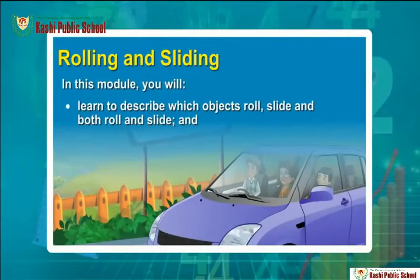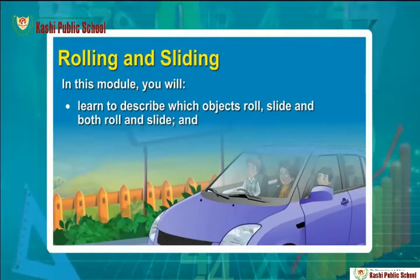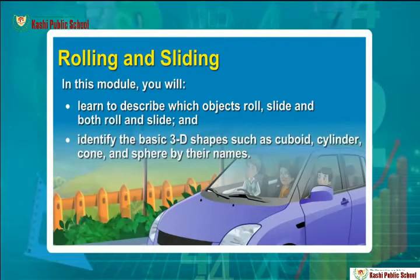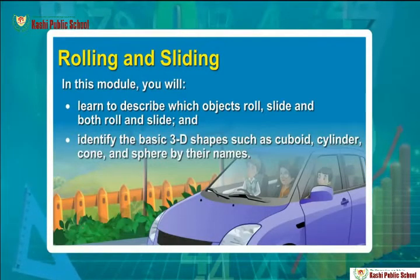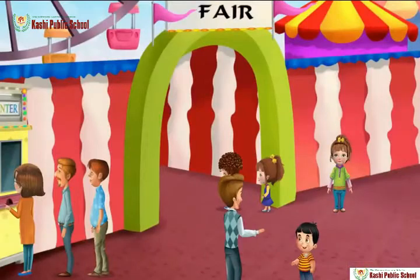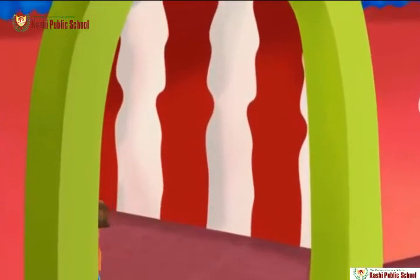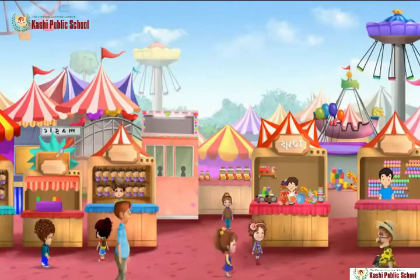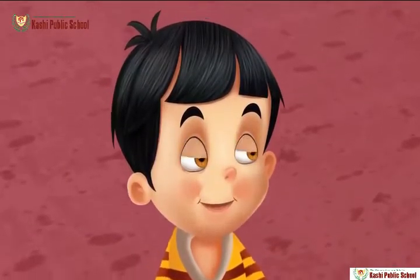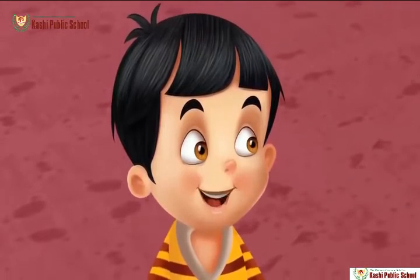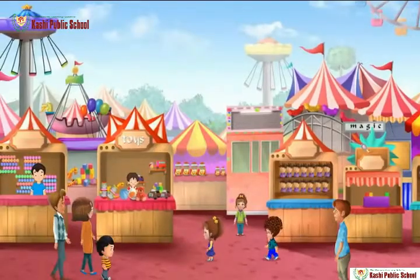Rolling and sliding. In this module you will learn to describe which objects roll, slide, and both roll and slide, and identify the basic 3D shapes such as cuboid, cylinder, cone, and sphere by their names.